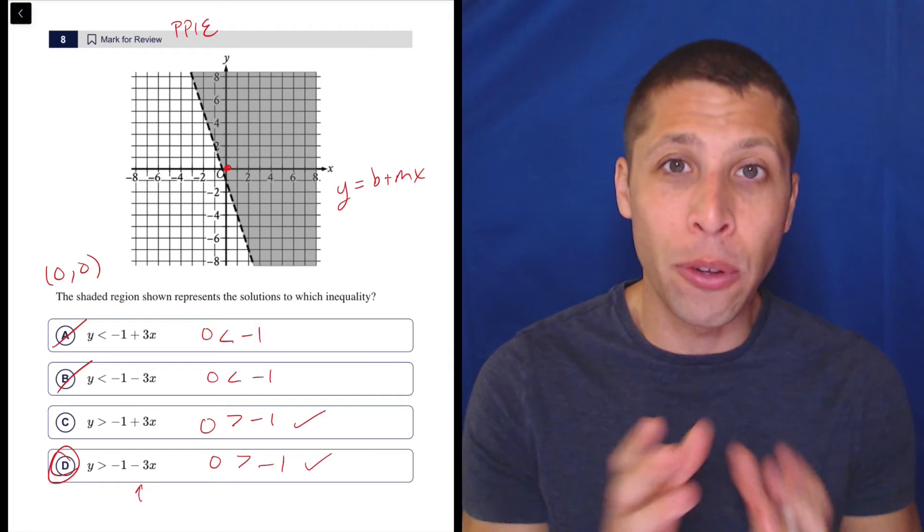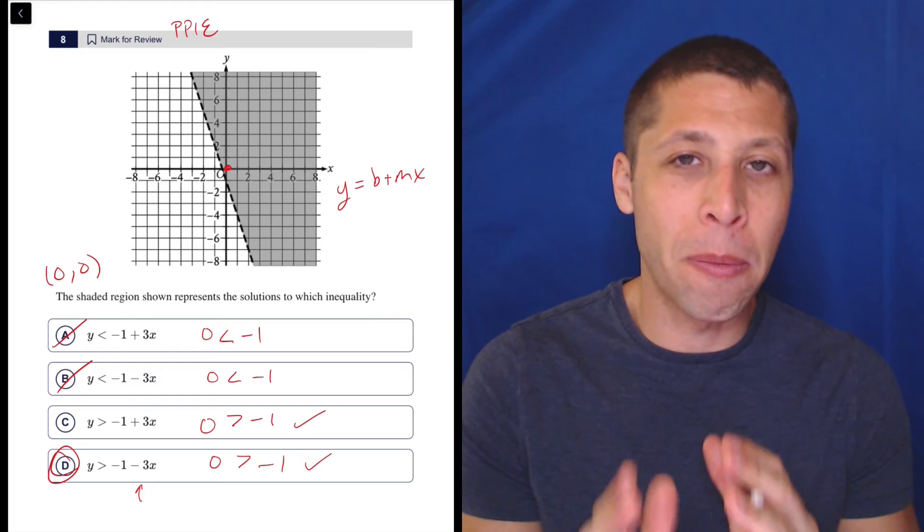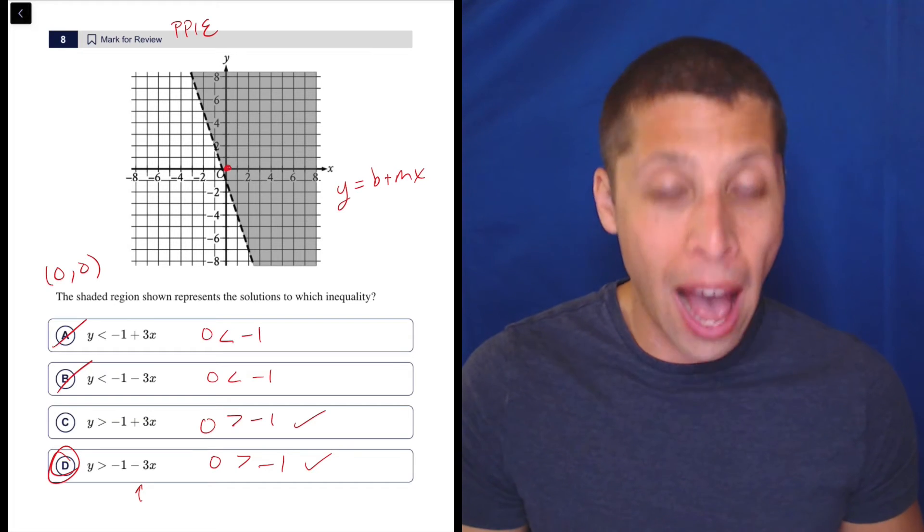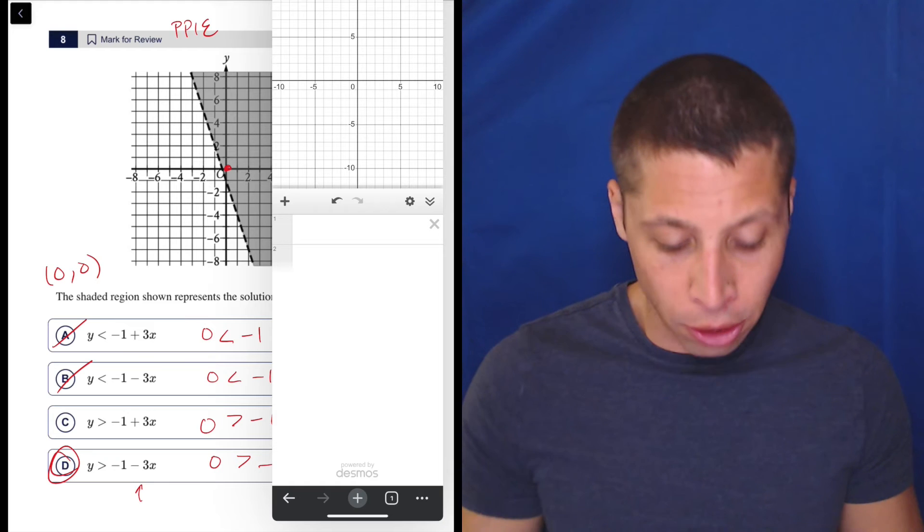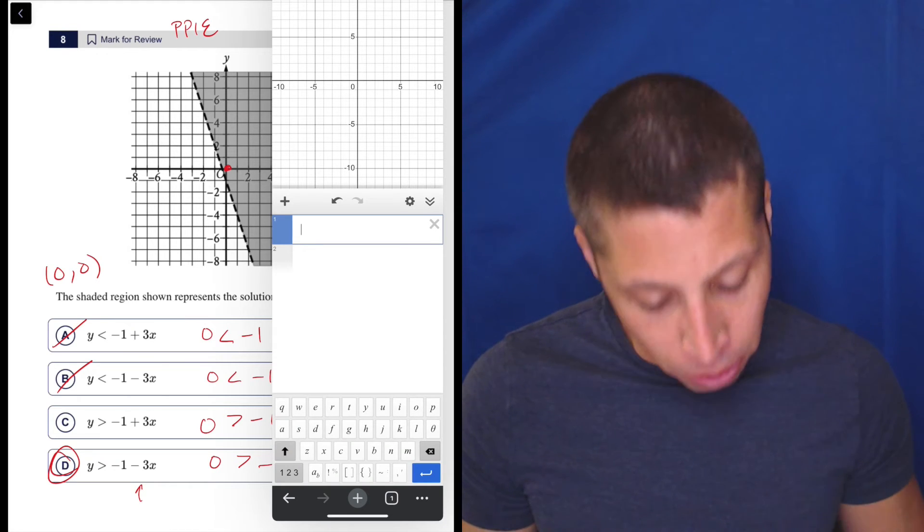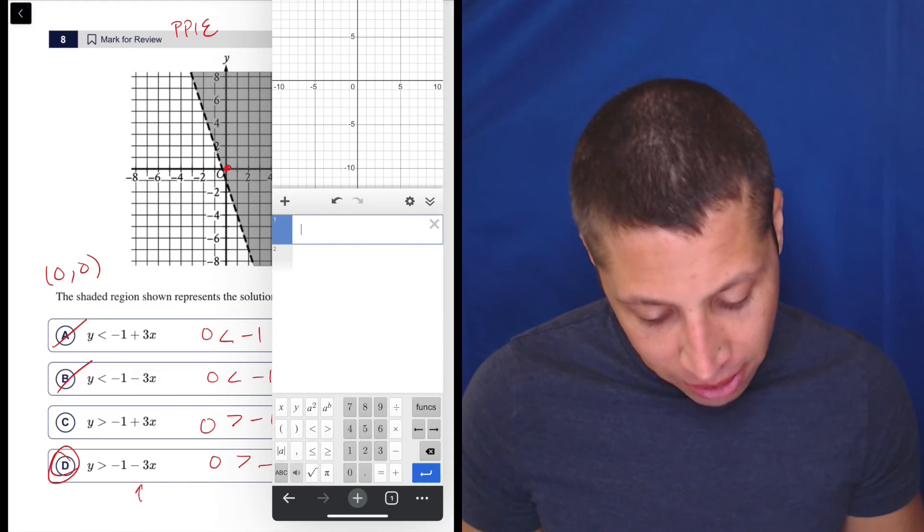You don't even need to go to Desmos if you just use that strategy from the beginning of thinking through how zero, zero would affect things. Now, if you were unsure, you could still go to Desmos, but notice it's going to take a long time to type this out.